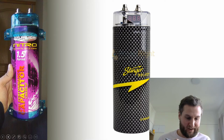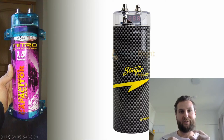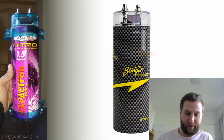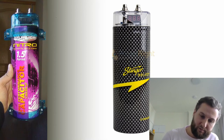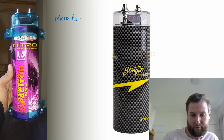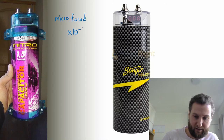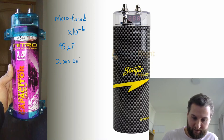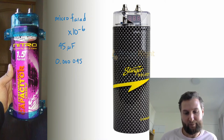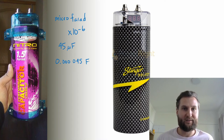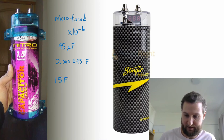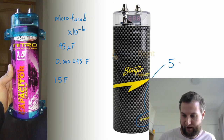Here we have some giant capacitors. The capacitors we saw earlier on circuit boards were quite small — even smaller than a battery — and that is the standard size, with capacitance measured in microfarads. A microfarad is 10 to the power of minus 6 farads, so even 45 microfarads is only 0.000045 farads. These large ones here are special purpose: the one on the left is 1.5 farads and the one on the right is an incredible 5 farads.